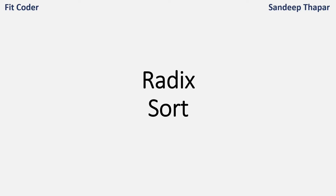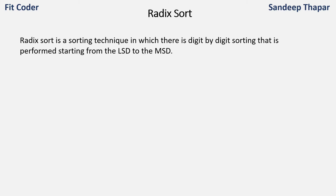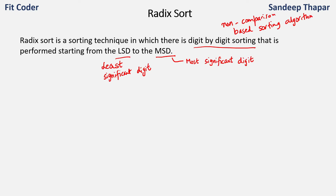Hi everyone, in this video we'll discuss Radix Sort. Radix Sort is a sorting algorithm in which we perform digit-by-digit sorting starting from the least significant digit to the most significant digit. It is also a non-comparison based sorting algorithm, just like Counting Sort. We perform Counting Sort when the range of elements is very small, but if the range is comparatively bigger, Counting Sort does not perform better than comparison sorting algorithms. For those scenarios, we have Radix Sort, which uses Counting Sort as a subroutine.